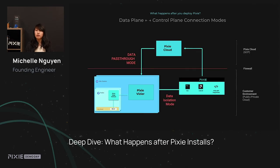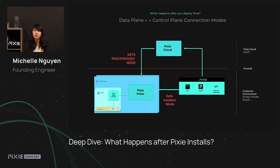So now that we know all of the data is stored in the node in your network, how do you actually access that data? For this, we provide two modes. The first one is the data pass-through mode, which is essentially a reverse proxy. When you make a request for your data, the request is sent to Pixie Cloud. Pixie Cloud forwards this request to the Vizier running on your cluster, and once that script is finished executing, it sends those results back to Pixie Cloud, where it sends it back to your browser or CLI. In this mode, the data is actually going through Pixie Cloud, so it is not fully retained inside your network. However, it does make it easier for users who might need to see your data to access it without having to be inside your network.